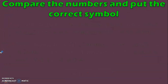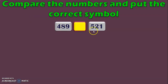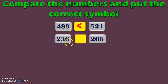Now that we have learnt the rules to compare three-digit numbers, let us do some exercises. Here we have two three-digit numbers — first look at the hundreds place: we have 4 and 5. We know 4 is lesser than 5, so 489 is lesser than 521. Next example: compare 236 with 206. In the hundreds place both numbers have 2, so move to the tens place where we have 3 and 0. We know 3 is greater than 0, so 236 is greater than 206.